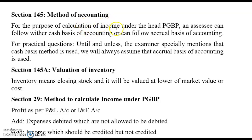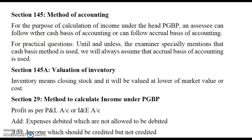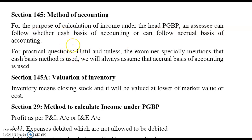When we discussed income under the head Profits and Gains from Business and Profession, we understood that an assessee can follow either the cash basis of accounting or the accrual basis of accounting. For practical questions, unless the examiner specifically mentions the cash basis method, we will always assume that the accrual basis of accounting is used.